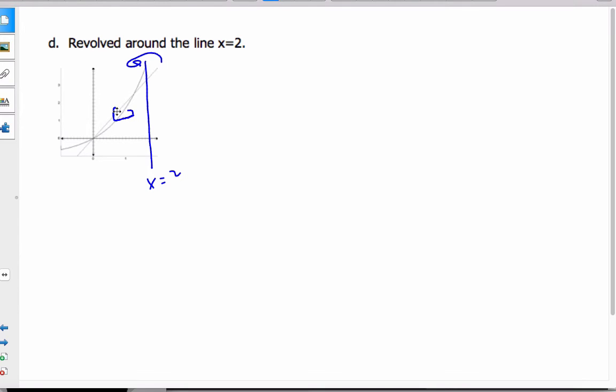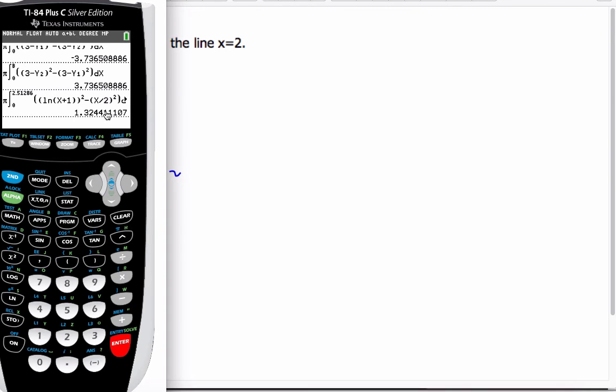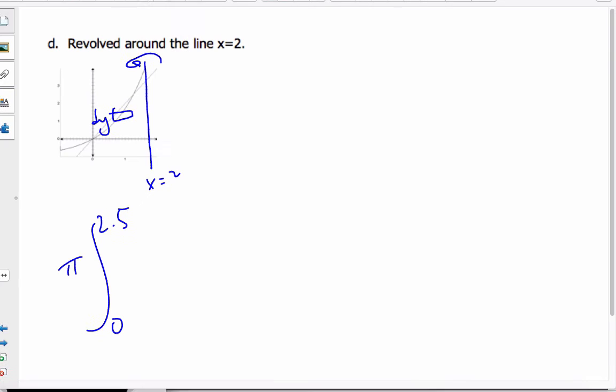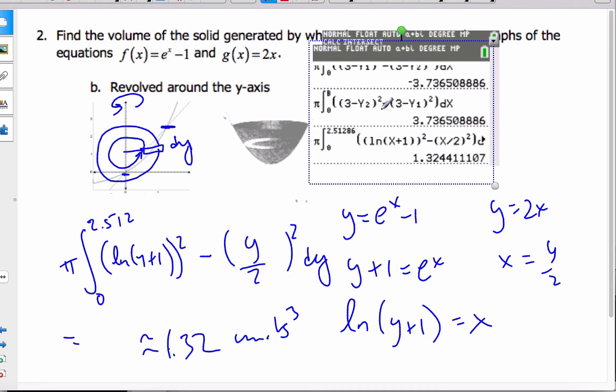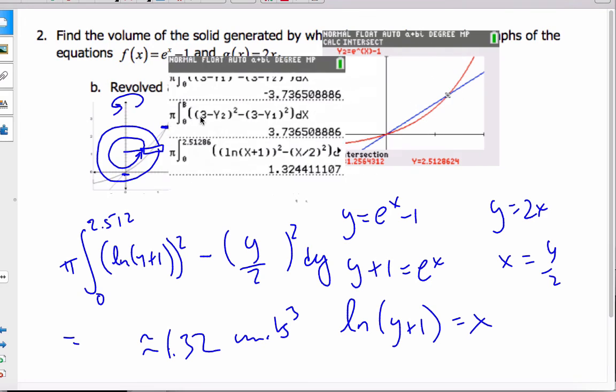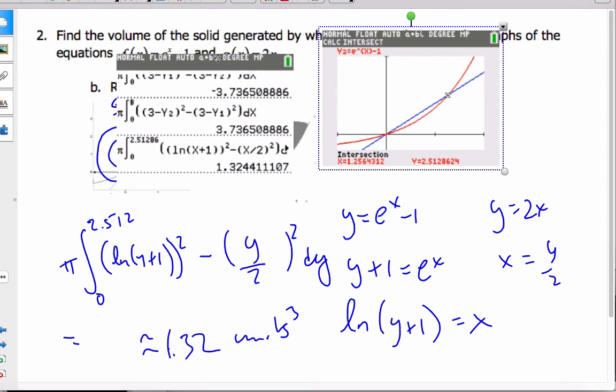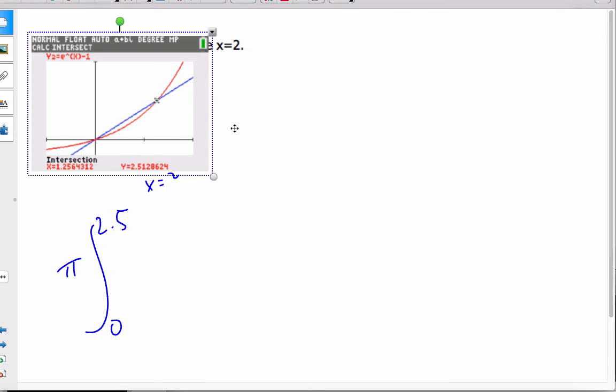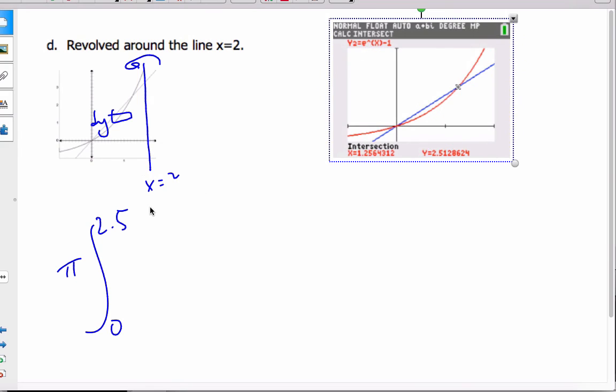So here is my rectangle. Again, it's dy's. So it's pi 0 to 2.512. Let's find that point of intersection again. I can see that the point of intersection is 2.512.